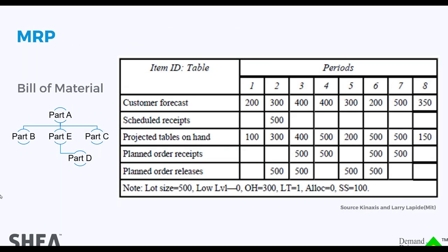MRP has been around since the late 50s and early 60s, commercialized in the 70s. Basically, using a bill of materials, you do a time-phased plan, traditionally using a forecast at the top level and driving through an MRP calculation. That is the tool that is inherently built into most ERP systems.